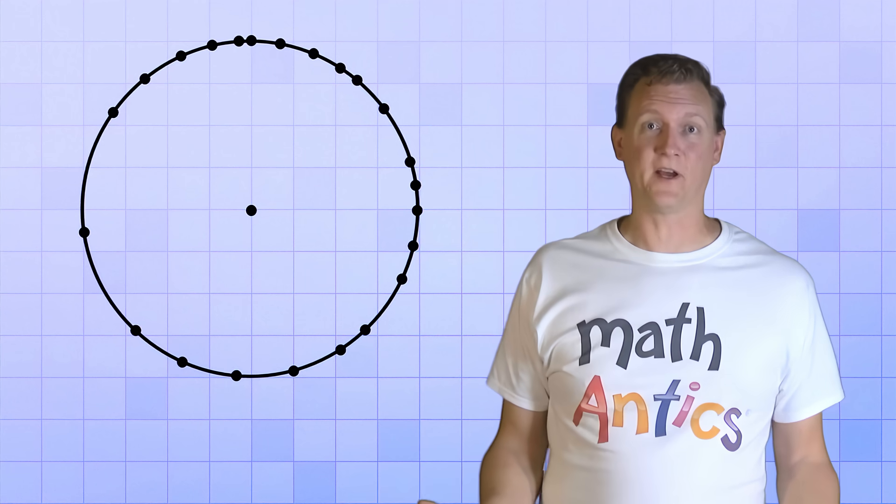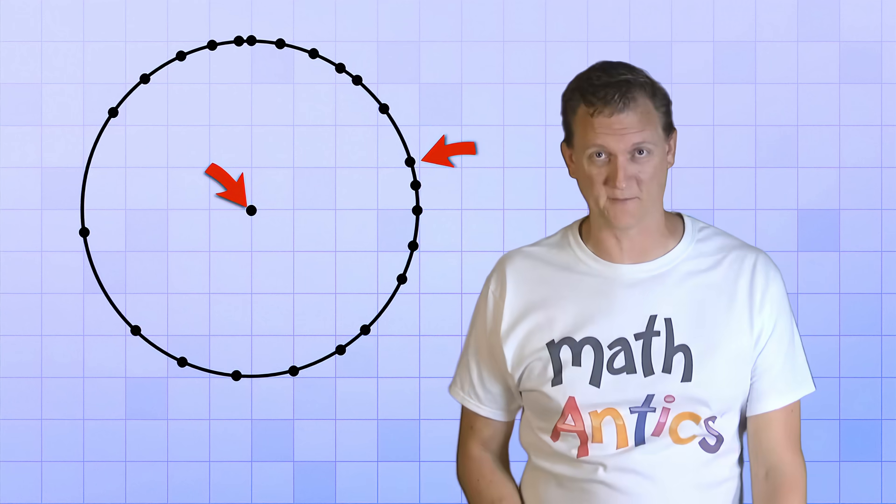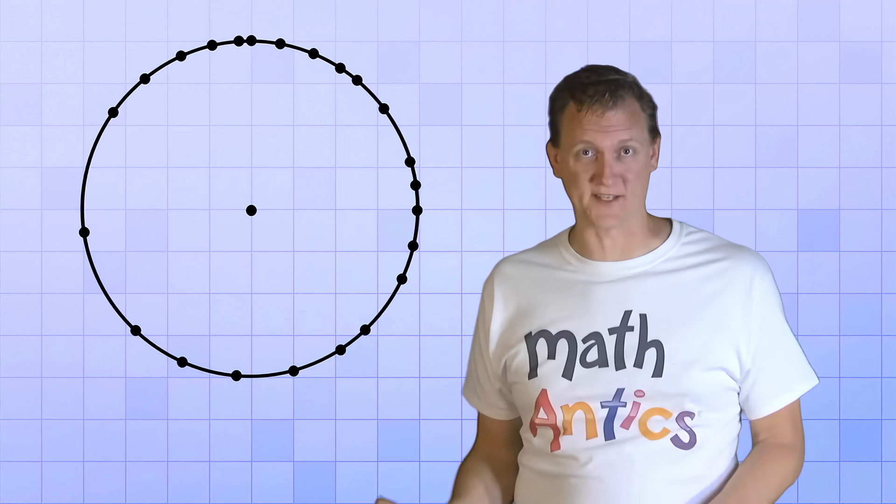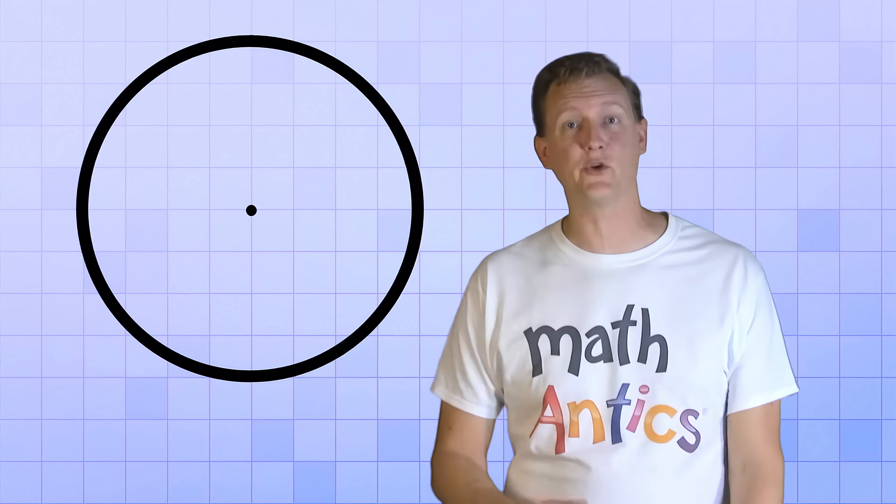And that's why a circle is defined as a set of points that are equidistant from a center point. But of course, we usually don't see it as a set of points because there's infinitely many of them, so they form a continuous circle.